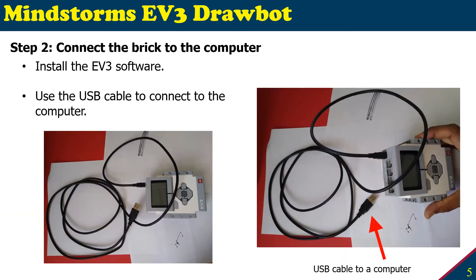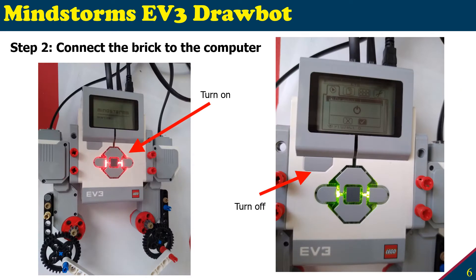Step two is connecting the brick to a computer or laptop. If you're using a laptop, you need to install the EV3 software, which is free. In our lab PCs it is already installed. Connect the USB into the port labeled PC on the brick, and plug the other end into your computer. To turn on the EV3, press the center button. To turn off, use the button at the top left, navigate to the turn-off tab, and confirm by pressing yes.